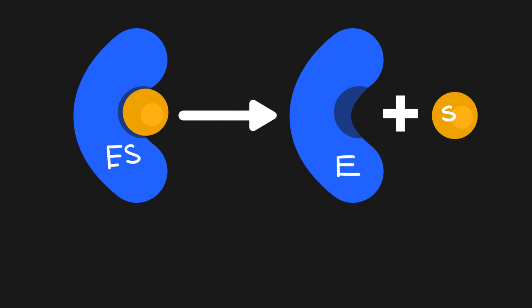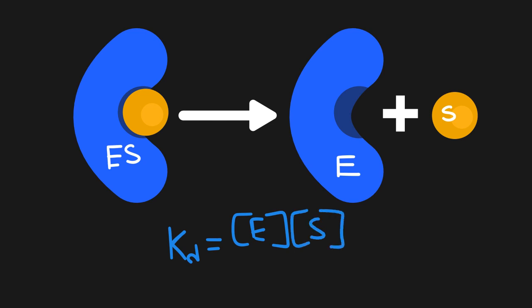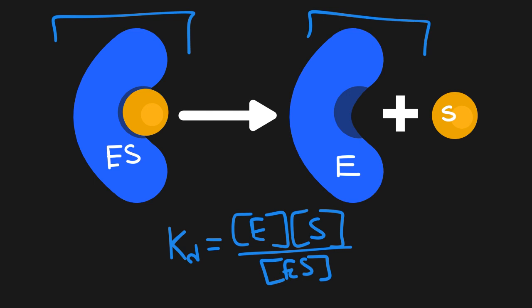Let's use KD as our first example and look at how understanding equilibrium constants can help us more generally. Since all K values are equal to the concentration of products over reactants, the value of KD will be equal to the concentration of the enzyme times the concentration of the substrate — since those are our products — all over the concentration of the enzyme-substrate complex, which is our reactant. Notice that when we have multiple products or multiple reactants, the concentrations of both show up and are multiplied by one another.